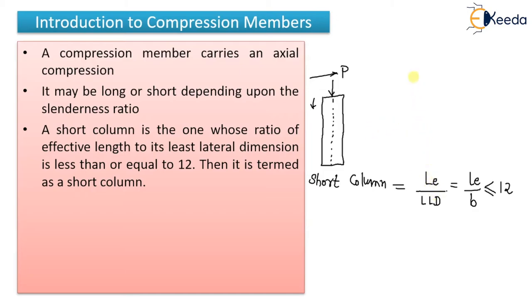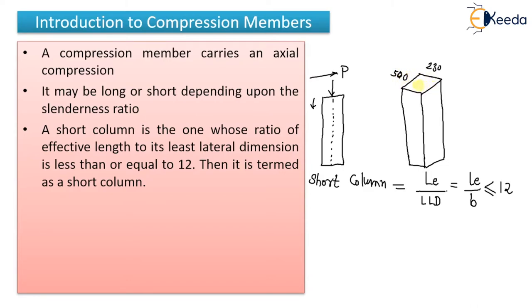Now what is effective length and what is least lateral dimension? For example, this is my column with dimensions 230 by 500 mm. So which one is the least dimension? 230 mm is the least dimension, so that is known as B, and the other is D. The effective length will be determined after end conditions are studied, which I will show in the next videos. So if the ratio of effective length to the least lateral dimension is less than or equal to 12, it is a short column.